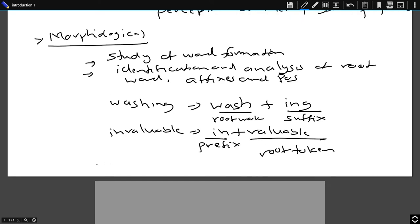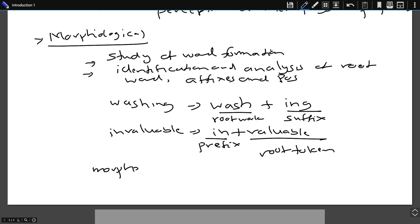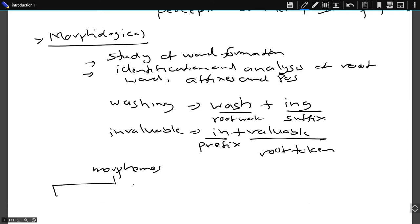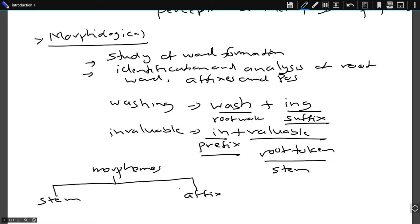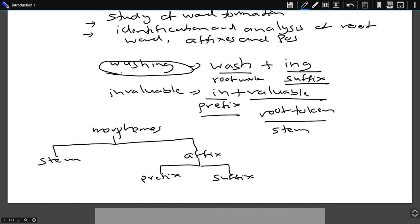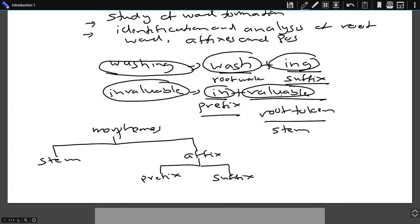Whenever we talk about morphological analysis, we need to understand morphemes. If we divide morphemes, we get two parts: one is the stem, and the other is the affix. The root token is the stem, and affixes — prefix or suffix — are combined with the stem to form a single morpheme. So 'washing' is a morpheme: 'wash' is the stem and 'ing' is the affix. 'Invaluable' — 'in' is the affix and 'valuable' is the stem.